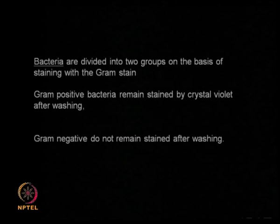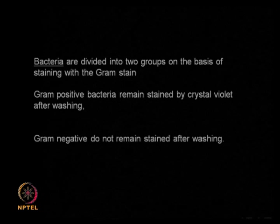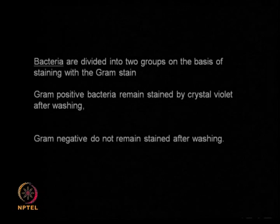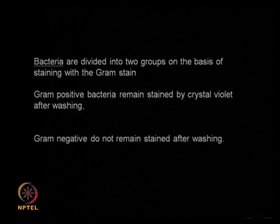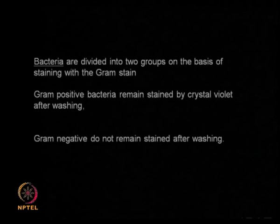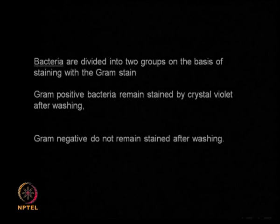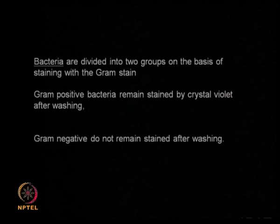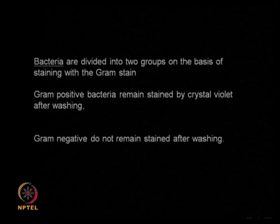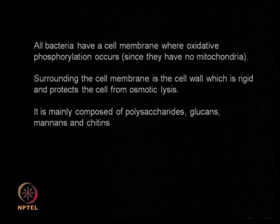Starting with bacteria — there are two types: gram positive and gram negative, classified based on staining. Gram positive bacteria remain stained by crystal violet even after washing; gram negative do not remain stained after washing. That depends on the presence of the cell wall. They all have a cell membrane where oxidative phosphorylation takes place, and they do not have a mitochondria.